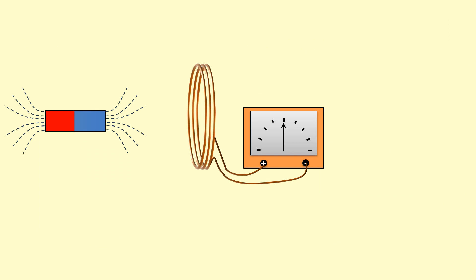So how does it work? Let's say we have this magnet here, with the magnetic field drawn around it, and I've got a coil of wire connected to an ammeter.